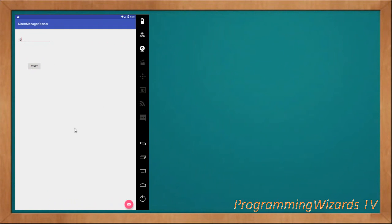Let's say I set my alarm to 10 seconds. My toast message is going to be shown after 10 seconds — that's the work we're scheduling. I click Start, alarm set to 10 seconds, and after 10 seconds you can see 'Alarm Ringing' right there.